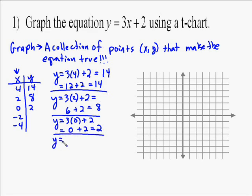Plug in negative 2, you get y equals, well, 3 times negative 2 plus 2. 3 times negative 2 is just negative 6, so you end up with negative 6 plus 2. Well, that's going to equal negative 4.